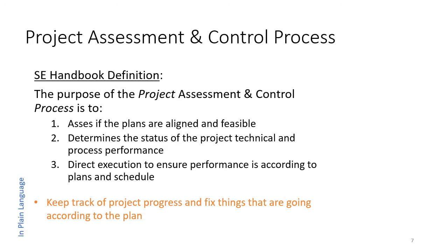The purpose of the project assessment and control process is to assess if the plans are aligned and feasible — those plans were developed in the previous process — to determine the status of the project's technical and process performance, to see how things are coming along, and to direct execution to ensure performance is according to the plans and schedule. In plain language, this process is responsible for keeping track of project progress and fixing things that are not going according to plan — tracking things and addressing variance to the plan.